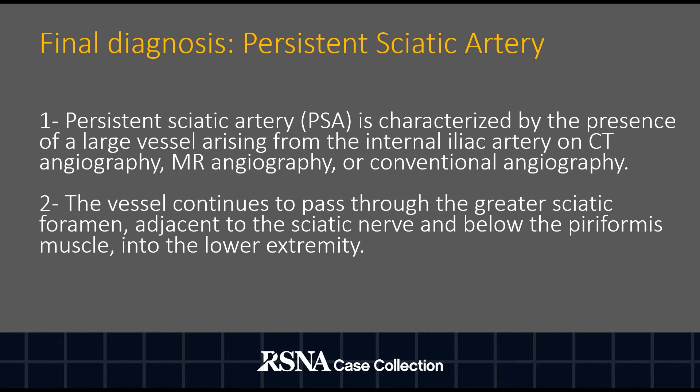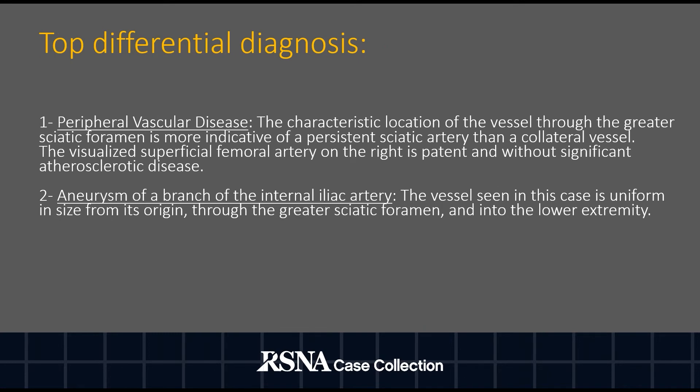Top differential diagnoses include peripheral vascular disease and an aneurysm of a branch of the internal iliac artery. The characteristic location of the vessel through the greater sciatic foramen is more indicative of a persistent sciatic artery than a collateral vessel. The visualized superficial femoral artery on the right is patent and without significant atherosclerotic disease. Given the vessel is uniform in size from its origin through the greater sciatic foramen into the lower extremity, an aneurysm of a branch of the internal iliac artery is unlikely.